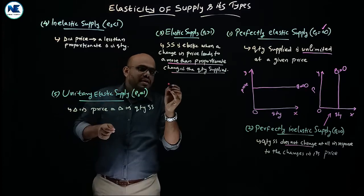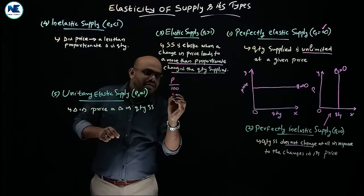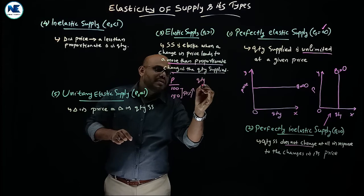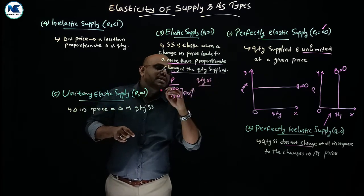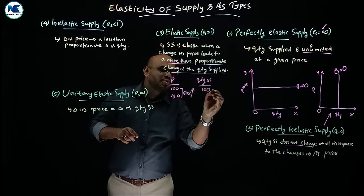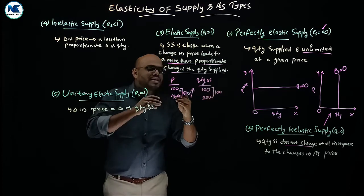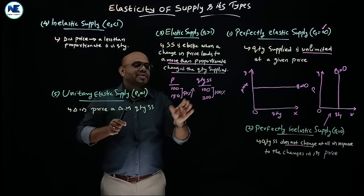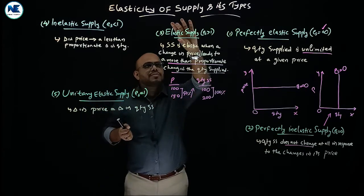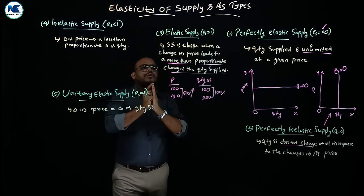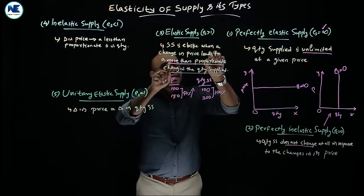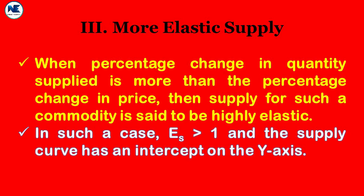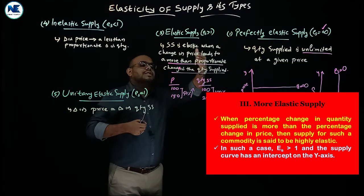For example, suppose price increases from 100 to 150 — that is a 50% increase. Then quantity supplied increases from 100 units to 200 units — that is a 100% increase. This is the case of elastic supply, where the coefficient is greater than one. The proportionate change in quantity supplied is much greater than the proportionate change in price.